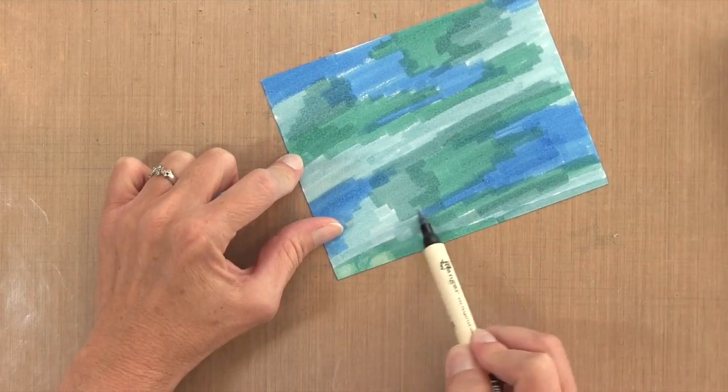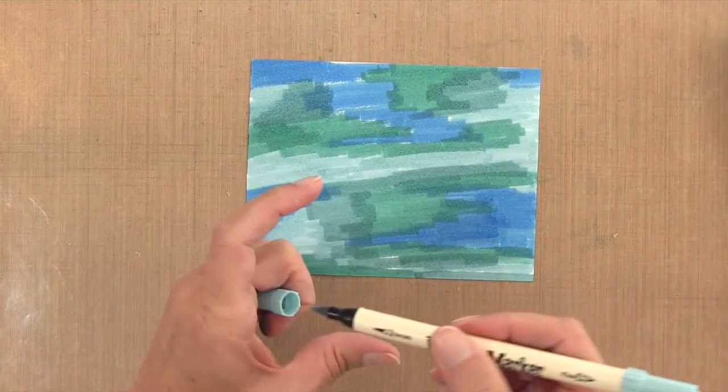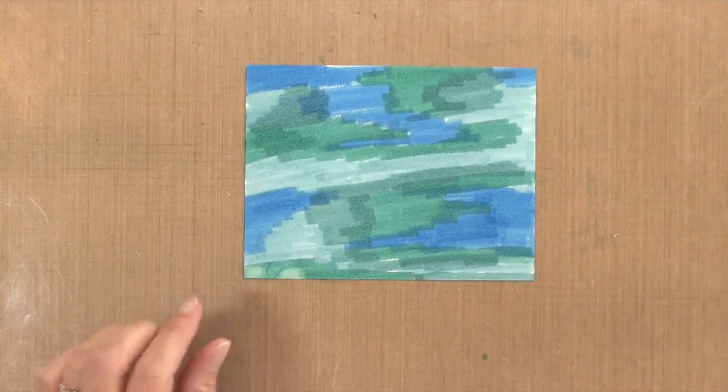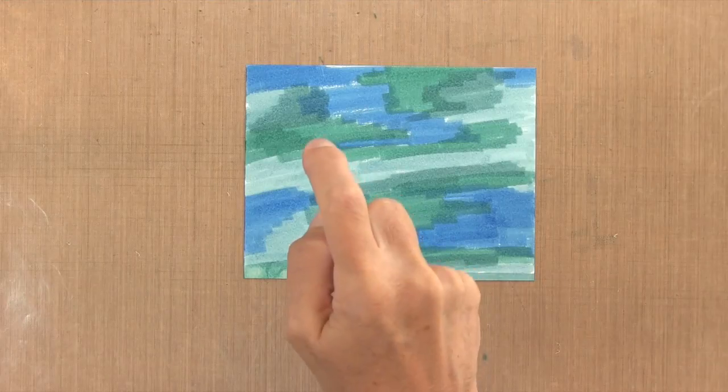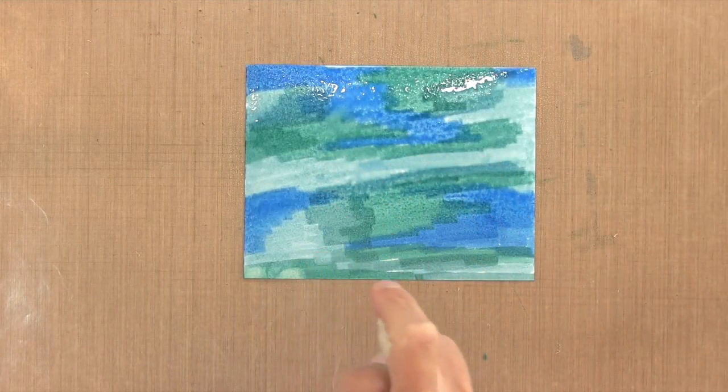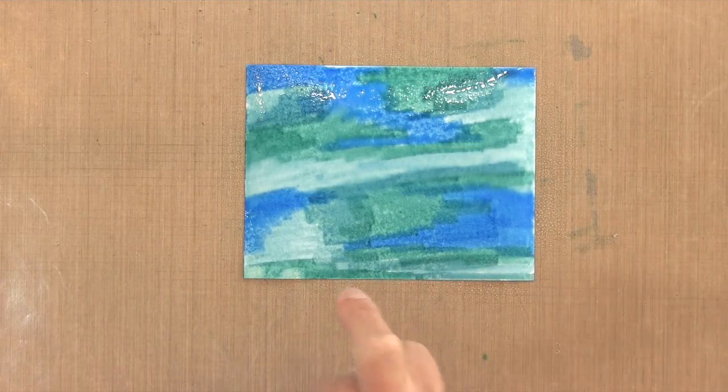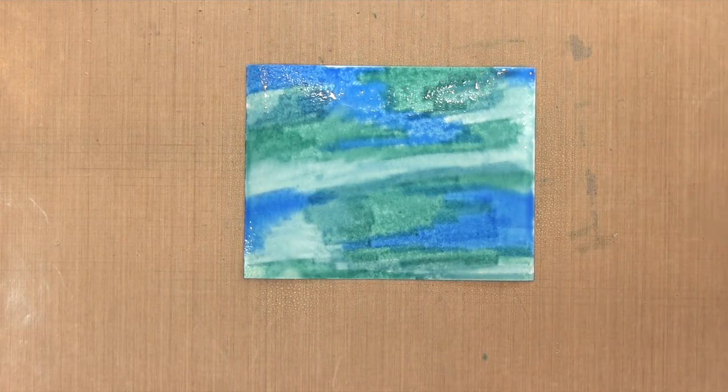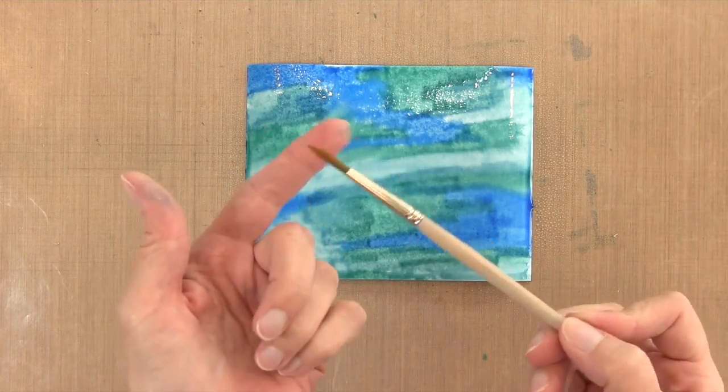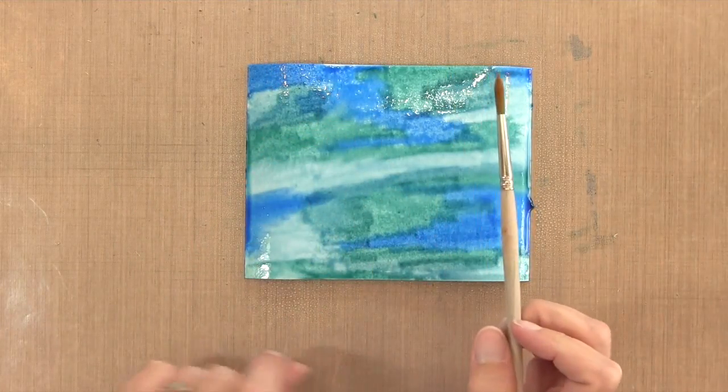The next step is to spray it with water. I'm actually spraying it with some Perfect Pearls, so I took the Perfect Pearls powder, mixed it with some water, and put it in a mini mister. I'm liberally applying the water, but you want to stop when it starts to pool up or puddle up. You don't want too much water.